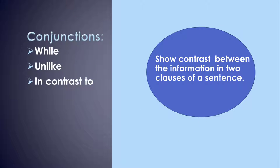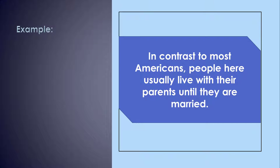The conjunctions while, unlike, and in contrast to show contrast between the information in two clauses of a sentence. For example, in contrast to most Americans, people here usually live with their parents until they are married.